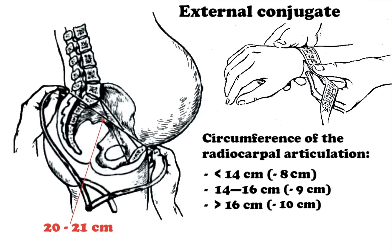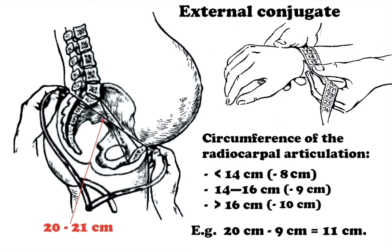The external conjugate is 20 to 21 cm. Measuring the external conjugate is very important because it helps us calculate the true conjugate. If the circumference of the radiocarpal articulation is below 14 cm, we subtract 8 cm from the external conjugate. If it is 14 to 16 cm, we subtract 9 cm. If the circumference is above 16 cm, we subtract 10 cm.